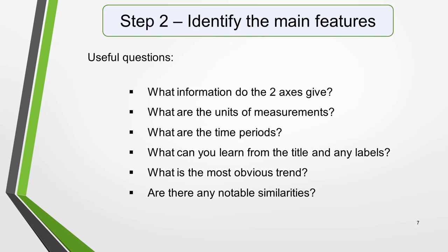The first question relates specifically to bar charts: what information do the two axes give? What are the units of measurement? What are the time periods? What can you learn from the title and any labels? What's the most obvious trend? And are there any notable similarities? I give more detail on how to use these questions, plus downloadable checklists for identifying the main features of all seven different types of Academic Task 1 questions, in the lesson on how to understand and analyse Task 1 questions. There's a link to it in the notes below this video.